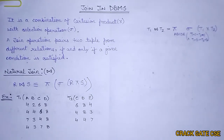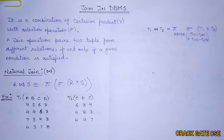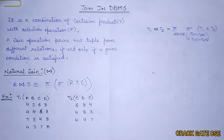Hello friends, welcome to Cracket CSE. In this series on databases, today we will be understanding join operations in relational algebra. Join operations are divided into three categories: natural join, conditional join, and outer join. We will be understanding all three joins and their subcategories. Without wasting time, let's start with the join definition.